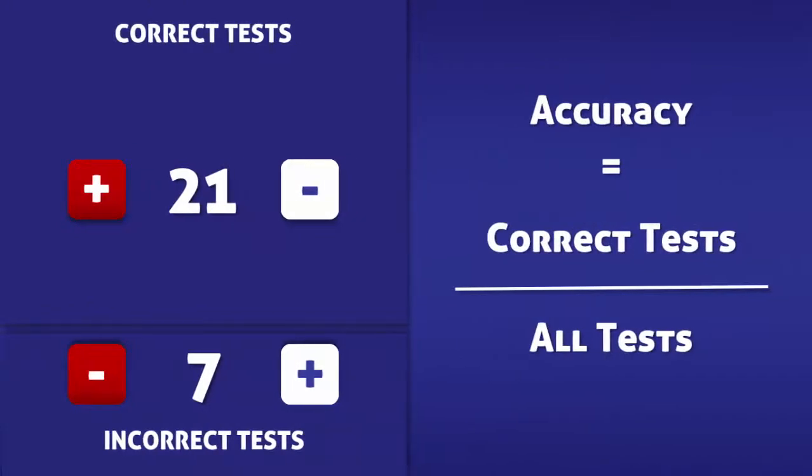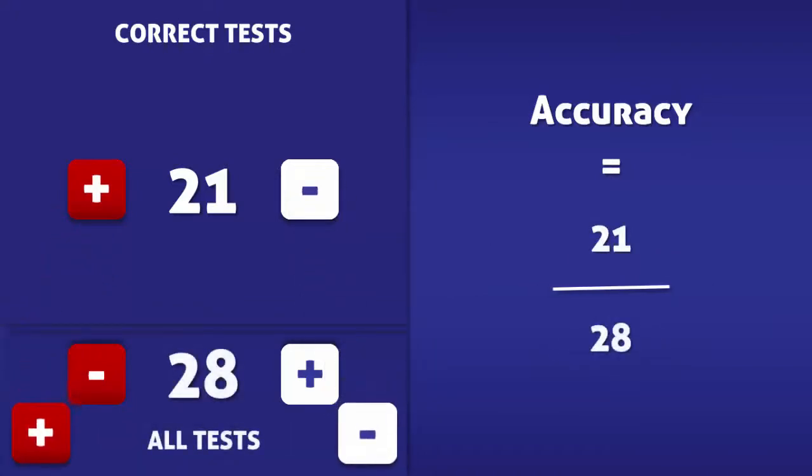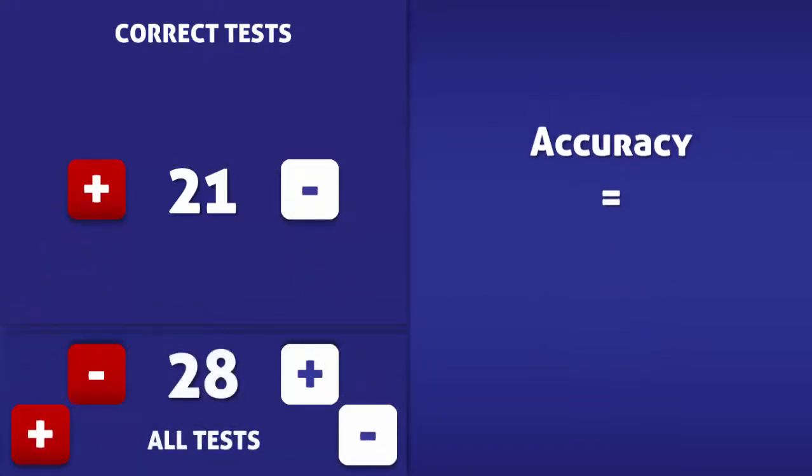To calculate the accuracy, we must divide the number of correct tests by the total number of tests. In this case, the accuracy of the test is 21 over 28, which is 75%.